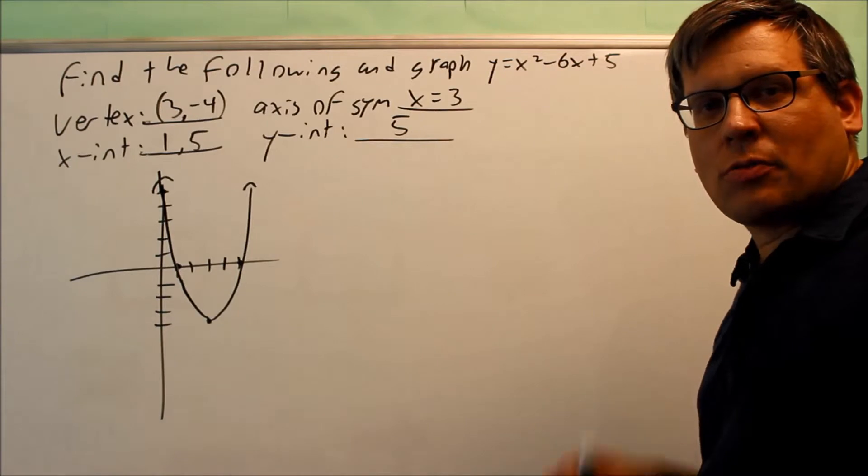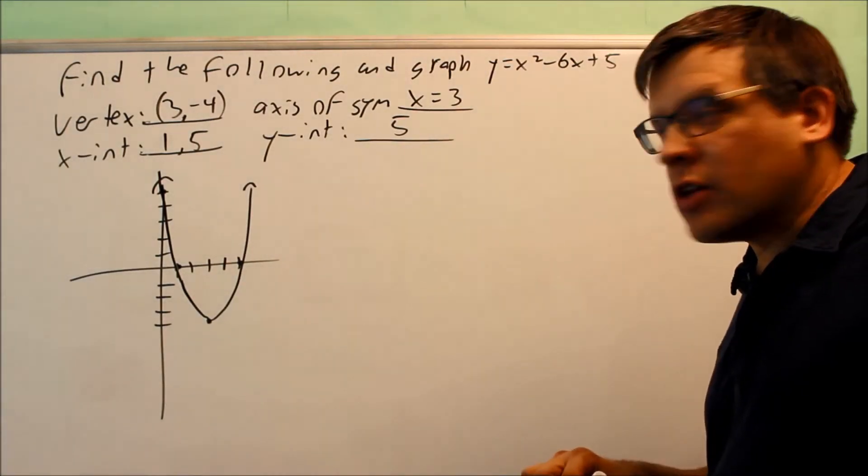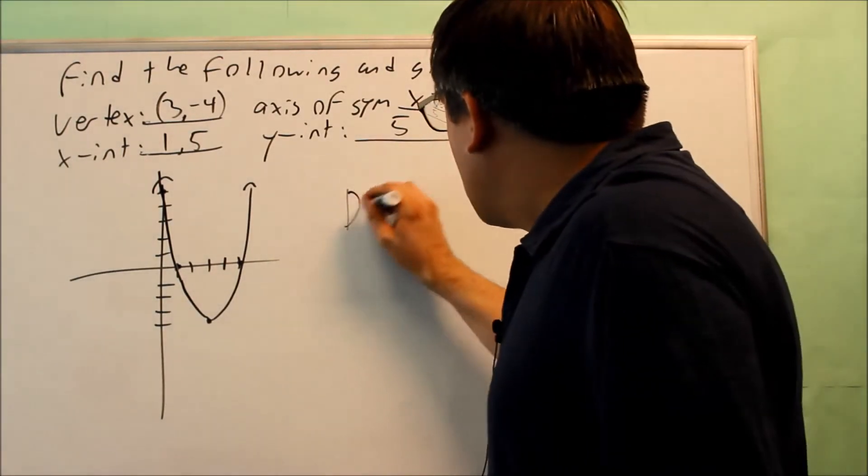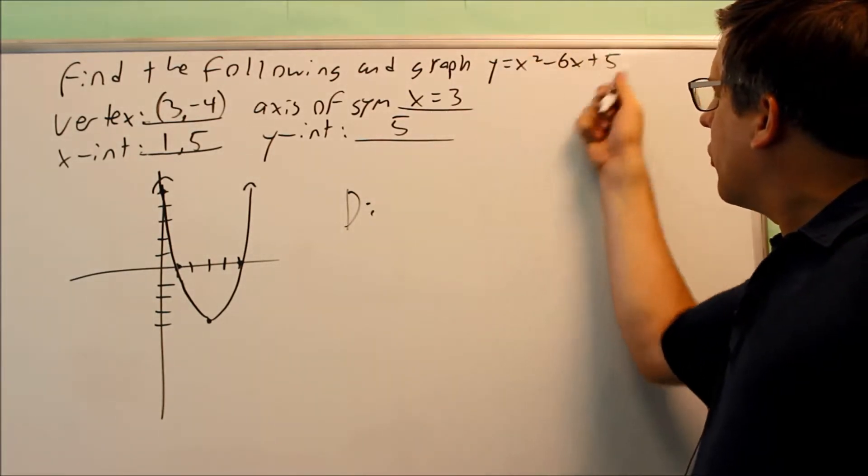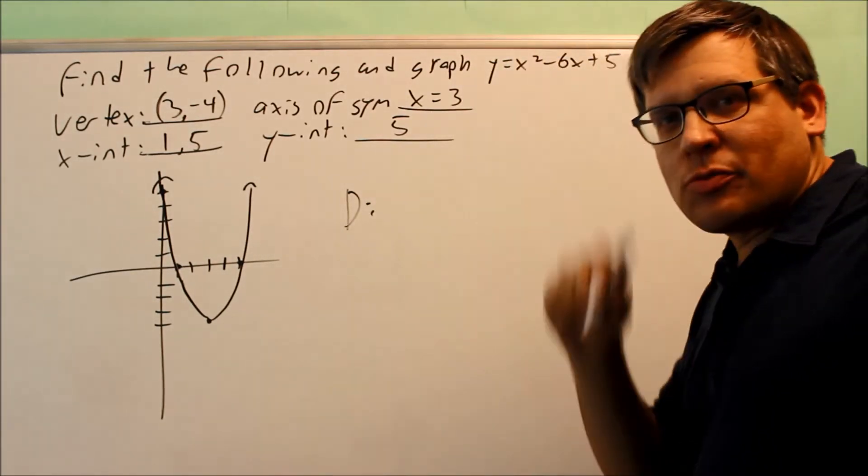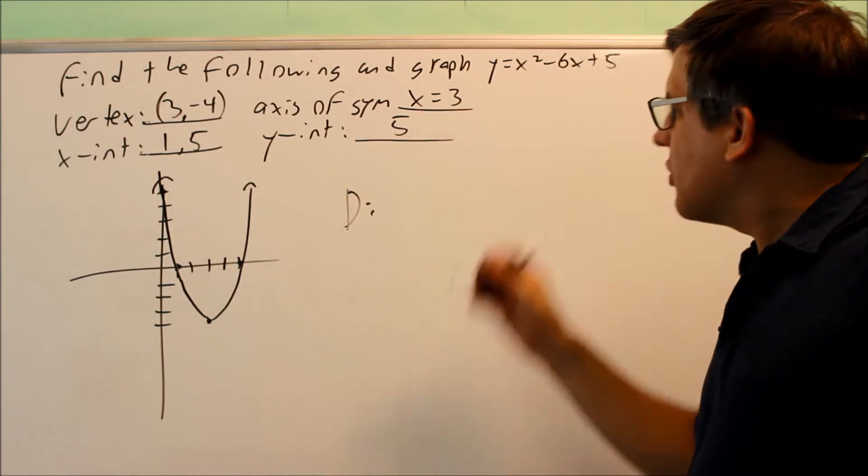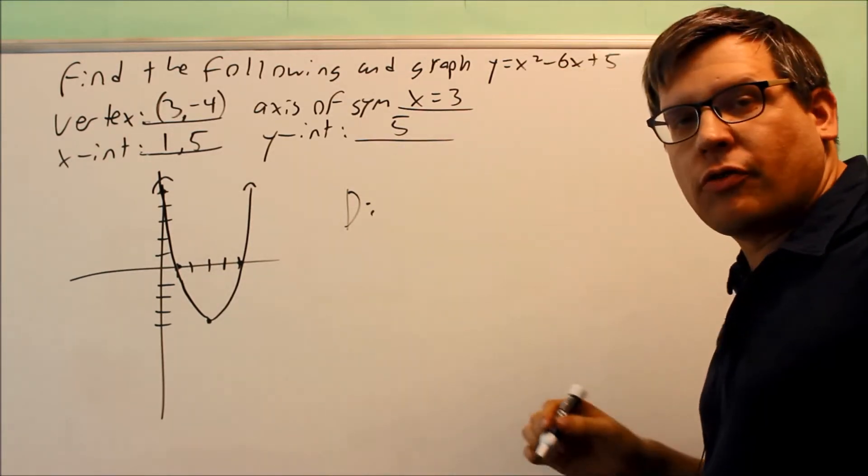So for this one we just graphed, suppose it asks us to find the domain and range along with that one as well. So domain is talking about the x-values the graph is using. Now if we look at the original equation, there's no division by zero, there's no square roots, so that means that there's no restrictions that we could put in there for x.